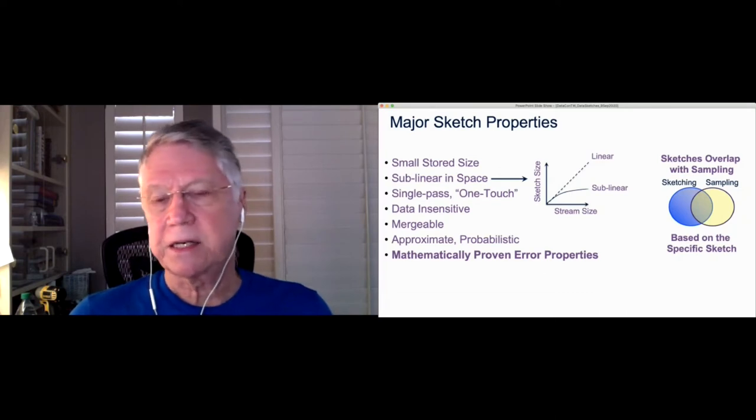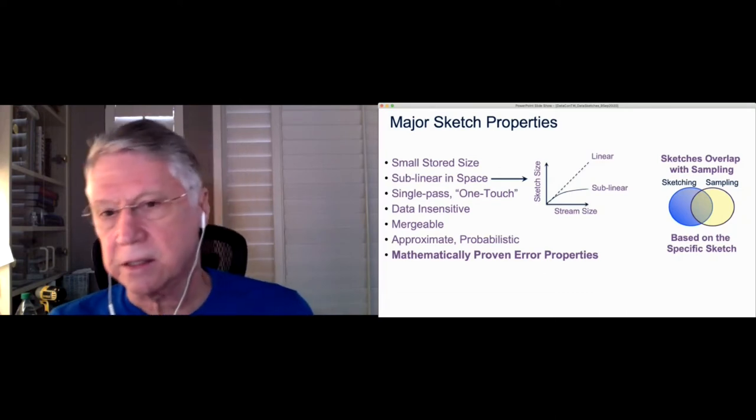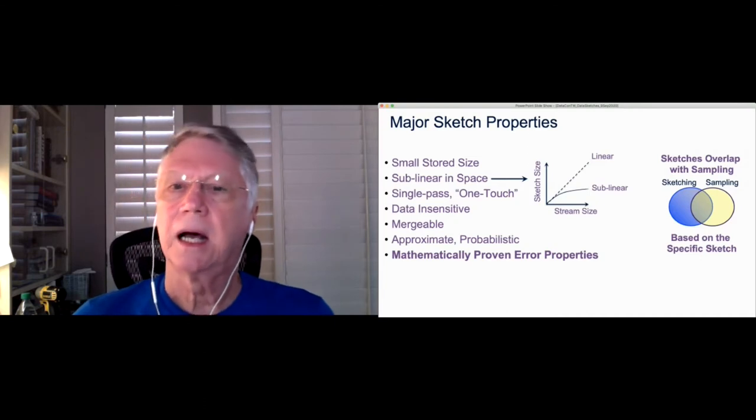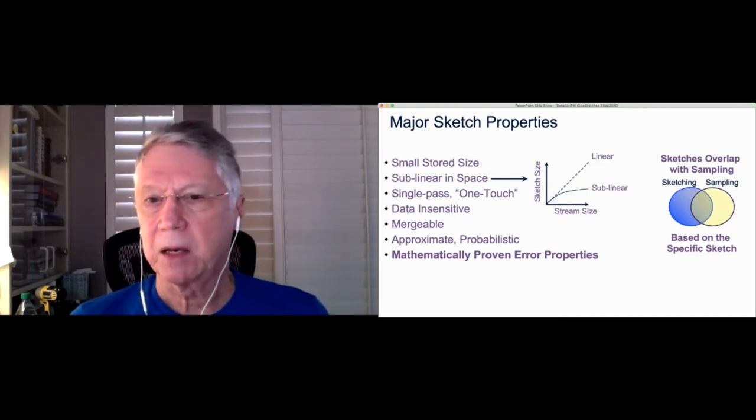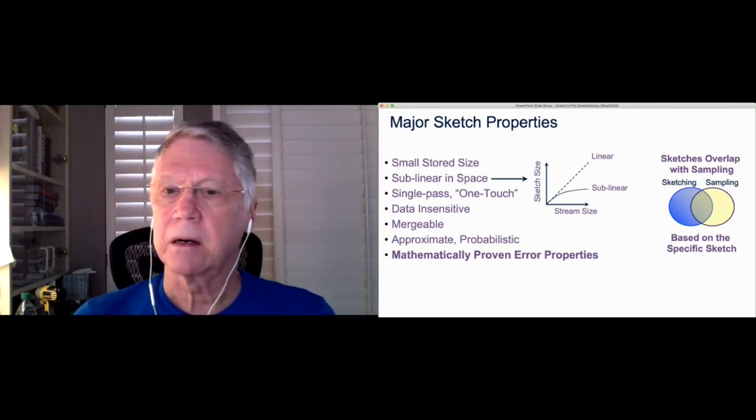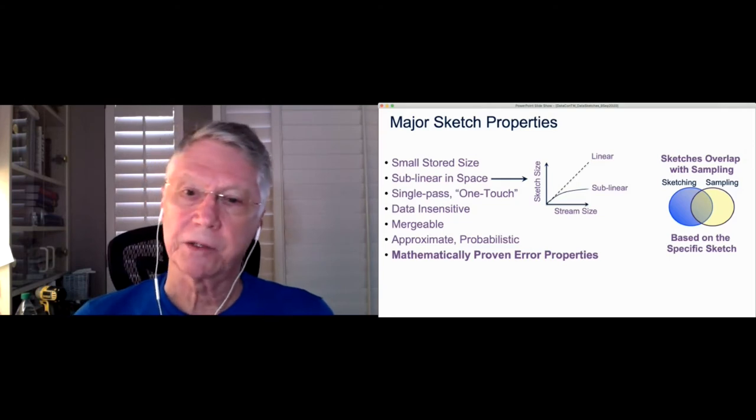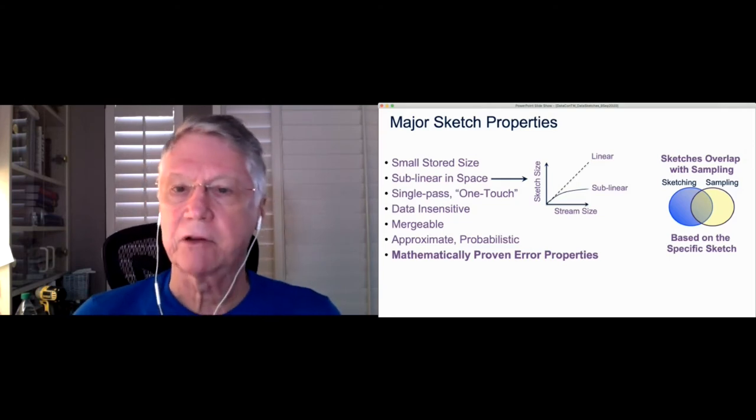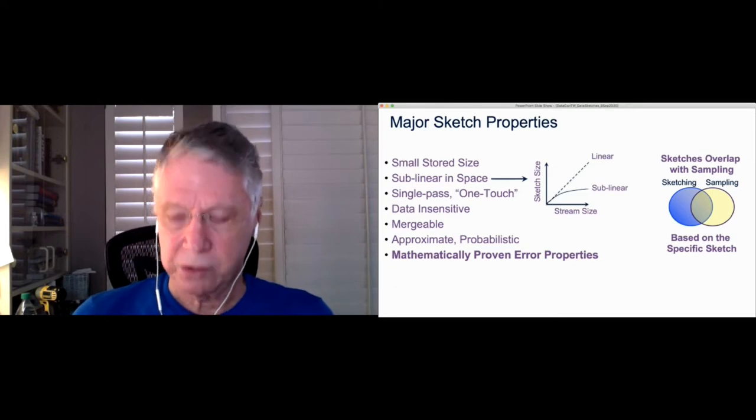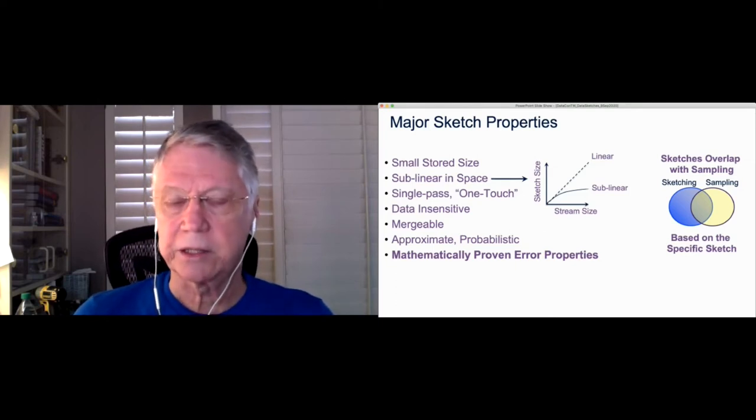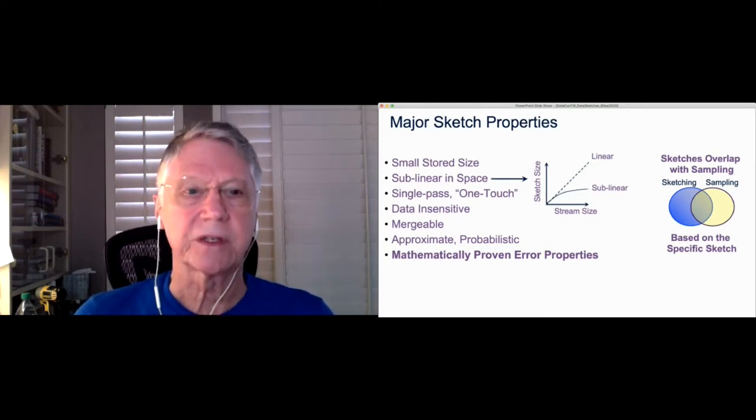Now, you might ask, how is that different from sampling? Well, it's similar in some ways. Sketches overlap with sampling. There are some sampling algorithms that are also sketching, but there are also sketching algorithms that are not at all sampling. And so the determination is based on the specific sketch.